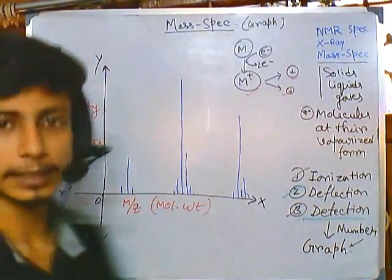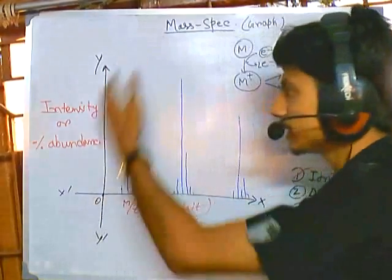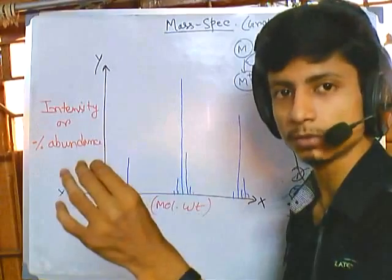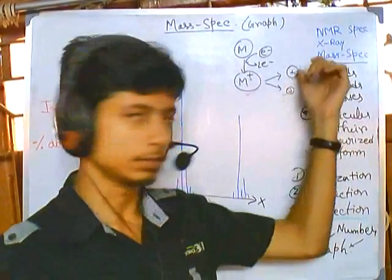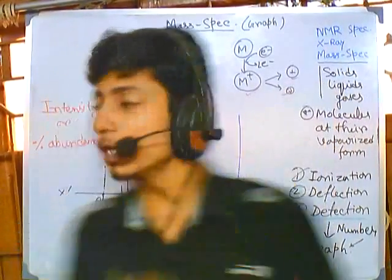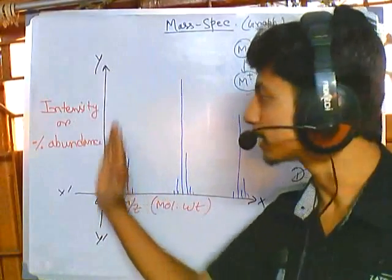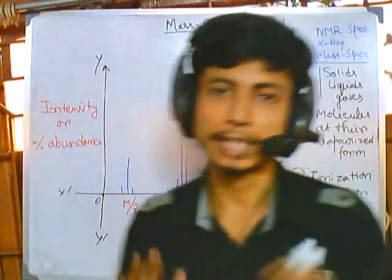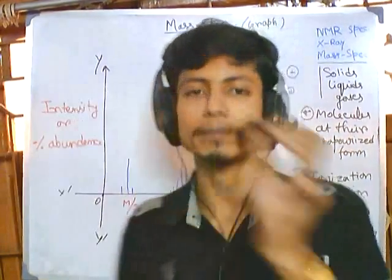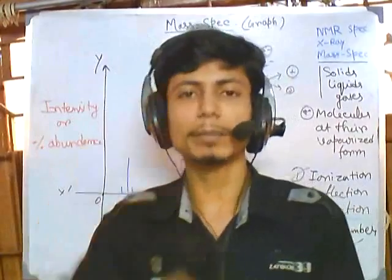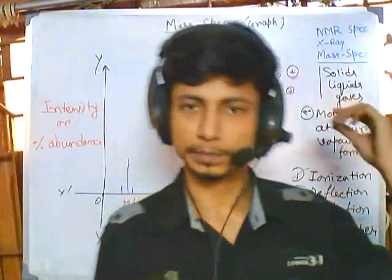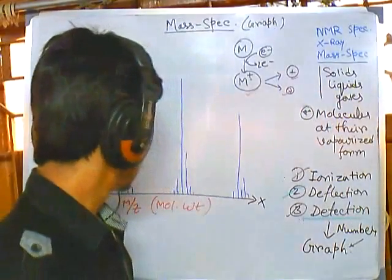On the y-axis we have intensity or percent abundance of that particular molecule — specifically a fragment of a particular molecule. Percentage abundance represents how much of that particular fragment is present in the total population. Intensity means the amount, or number, of that particular fragment ion that is present in the sample.